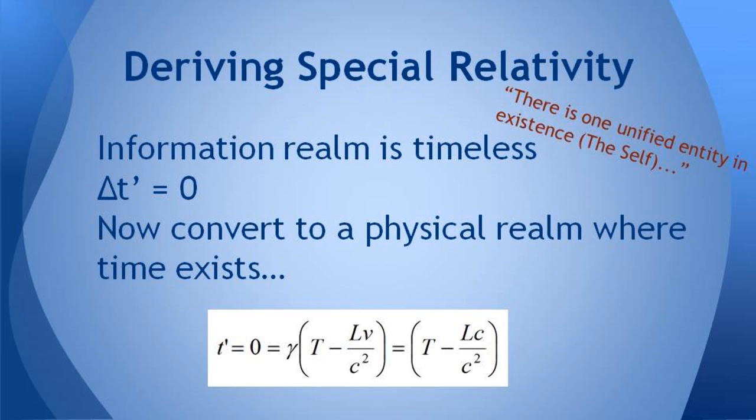Now I'm going to derive special relativity from these principles. So in the upper right, we have the original statement in the perennial wisdom: there is one unified entity in existence, the self. And this is the information realm, which is timeless. So delta t prime equals zero in any kind of measurement that could be made of the information realm.